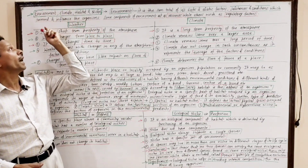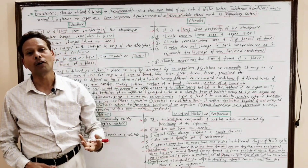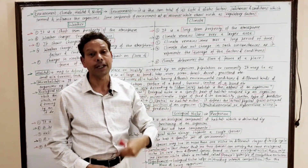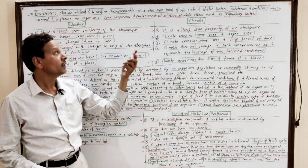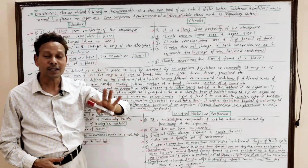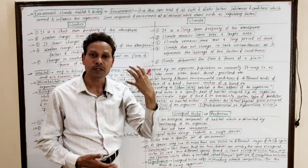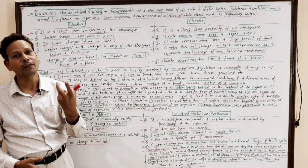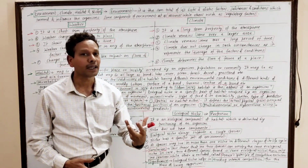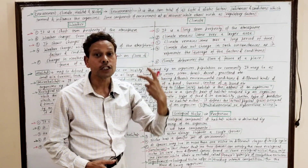First of all we will discuss environment. Environment is the sum total of abiotic and biotic factors, substances, and conditions which surround and influence the organisms. Some components of environment act as regulatory factors and some components act as resources.